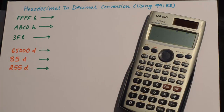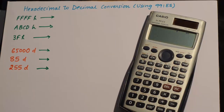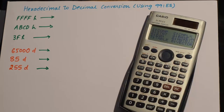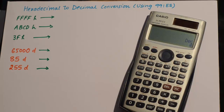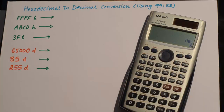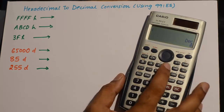When you turn the calculator on you normally find it in computational mode. What you can do is go to Mode and then click on 4. In this mode you'll find all the number systems being active — for example, currently the decimal number system is active.